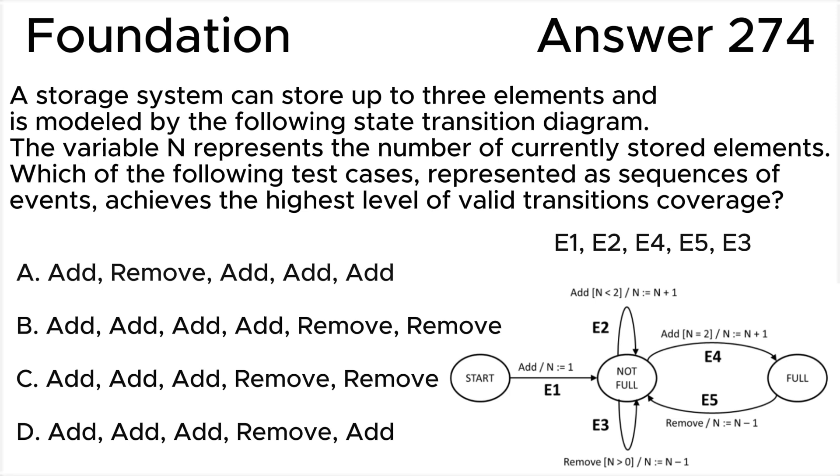Test D can be written as E1, E2, E4, E4, E5, E4, so covers 4 out of 5 valid transitions, achieving 80% valid transitions coverage. In summary, the highest level of valid transitions coverage is C.